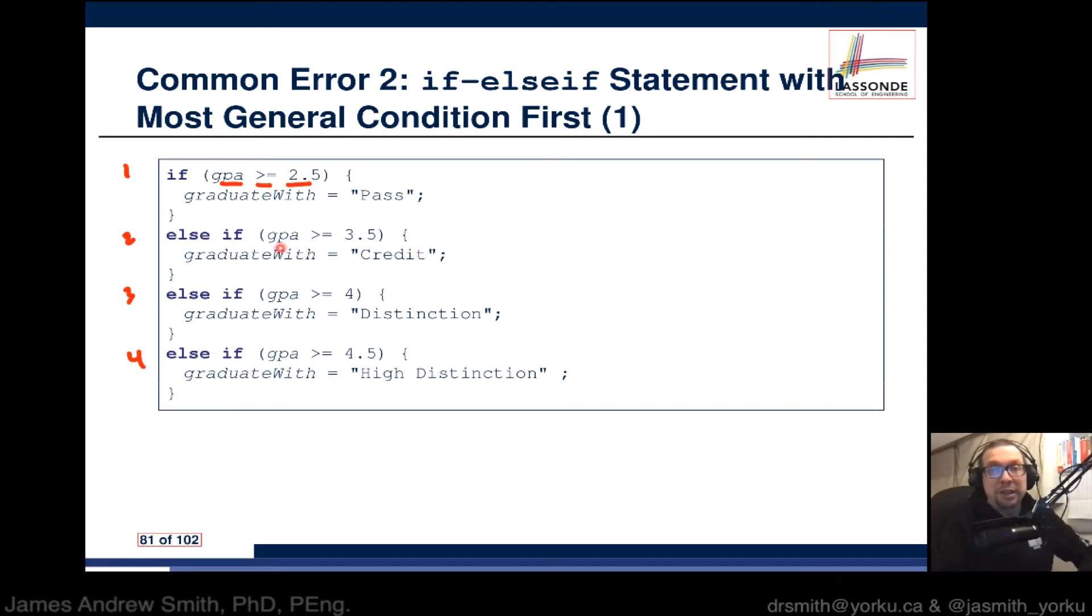The next condition is if the GPA is greater than or equal to 3.5, then the student will get a value of credit. If the student's GPA is above 4, then the student gets a distinction. If the student's GPA is above 4.5, then the student gets a high distinction, which is really good. So a student that gets a really high mark will get a high distinction on their transcript.